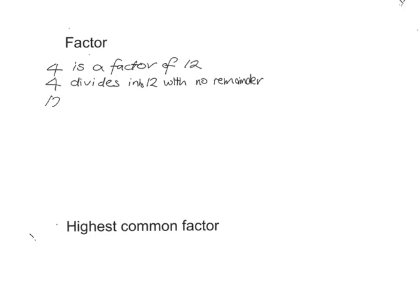We can see this because 12 divided by 4 gives you the whole number 3 with no remainder. We know multiplication and division are closely related, so we can rewrite that division as a multiplication: 3 times 4 is 12. So, 4 is a factor of 12 either by seeing that 12 divided by 4 gives you a whole number, or because a whole number multiplied by 4 gives you 12.